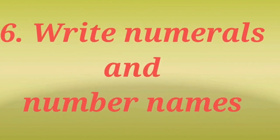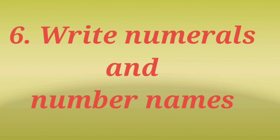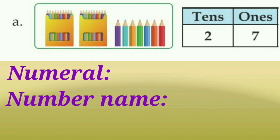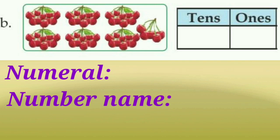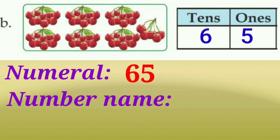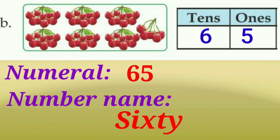Now sixth bit children. Read the heading: write numerals and number names. Here one picture is there — some pencils. How many tens and ones are there? Two tens, seven ones. The numeral is 27. The number name of 27 is T-W-E-N-T-Y S-E-V-E-N, twenty-seven. And in this picture some cherries are there. How many tens and ones? Six tens, five ones. So the numeral is 65. The number name is S-I-X-T-Y F-I-V-E, sixty-five.